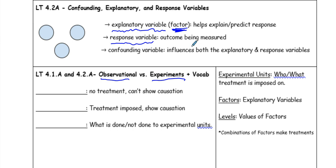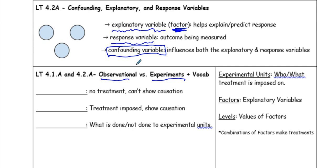Response variables are outcomes being measured in an experiment or observational study. We can also have confounding variables, which actually influence both the explanatory and response variables. In an observational study, there might be confounding variables in place — other factors we're not observing or measuring that may also influence the explanatory and response variables.